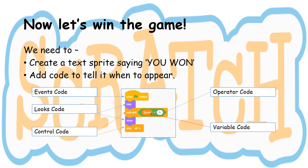Now let's win the game. We need to create a text sprite saying you won and add code to tell it when to appear. We will need events code, looks code, control code, operator code and variable code.